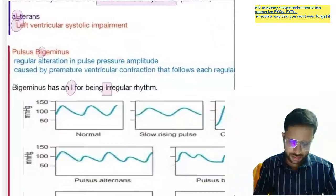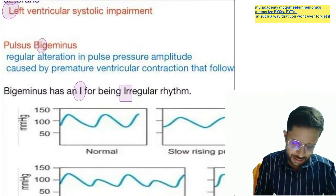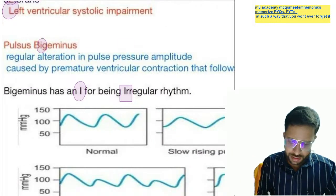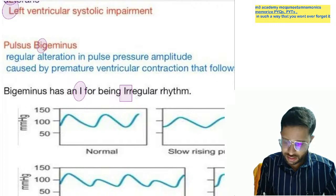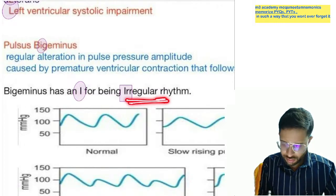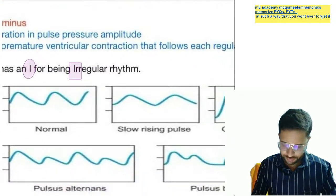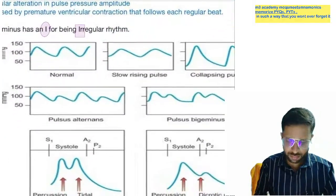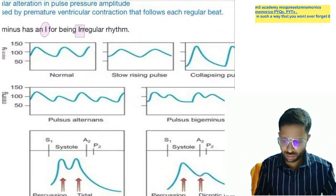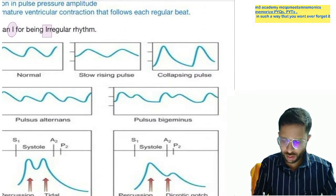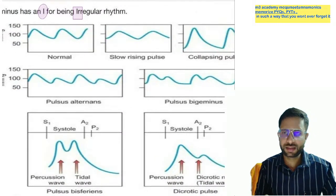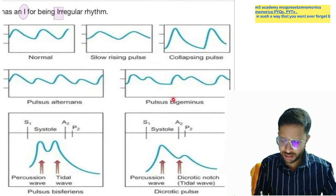Pulsus bigeminus — bigeminus has I, which means irregular rhythm. So there is regular alternation in pulse pressure amplitude, but the rhythm is irregular. Pulsus alternans has R for regular, pulsus bigeminus has I for irregular.